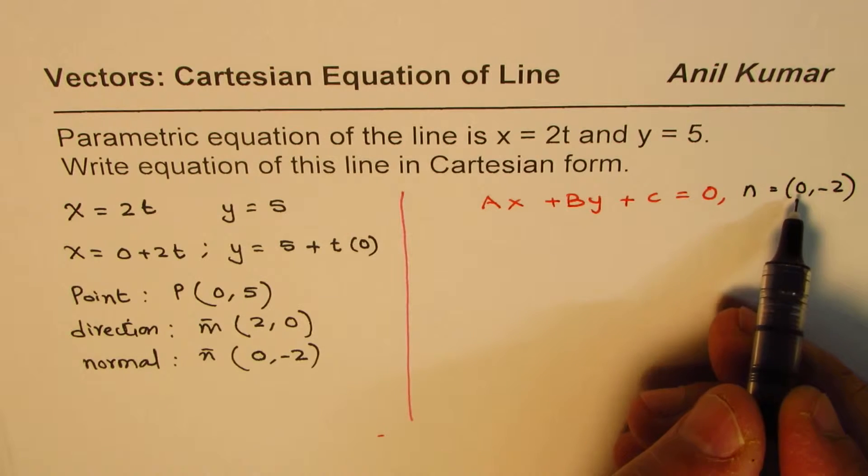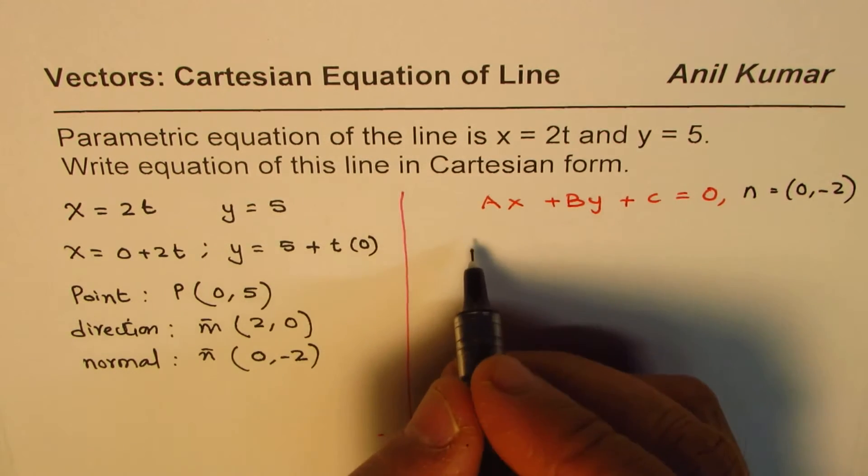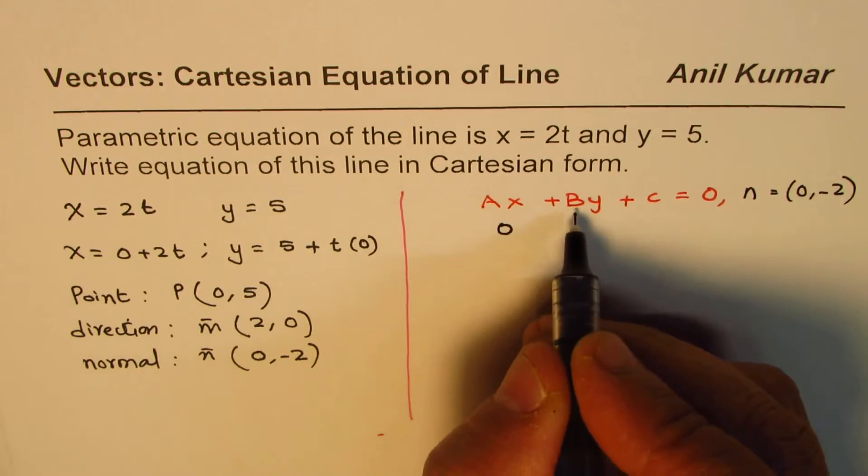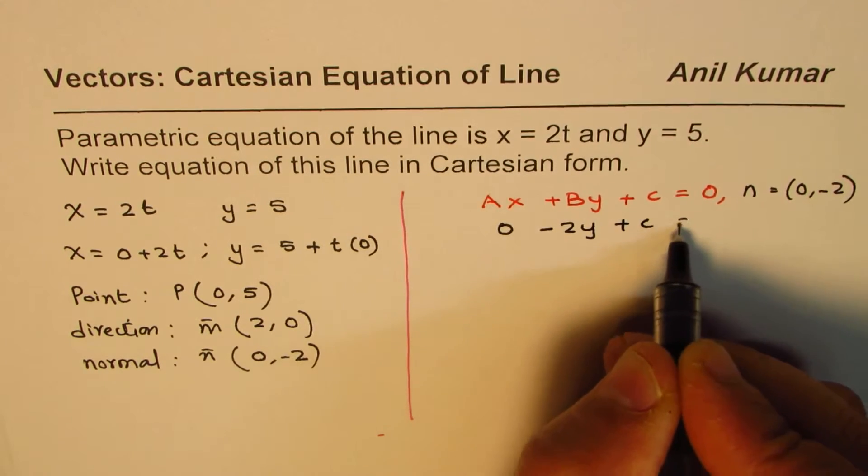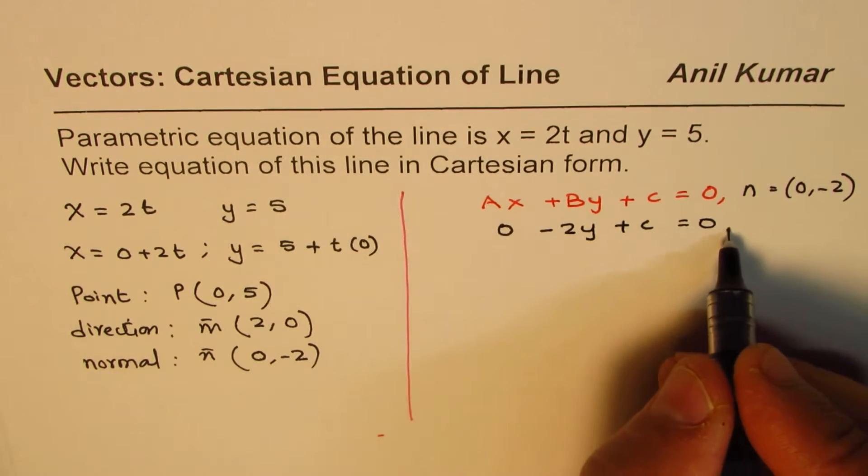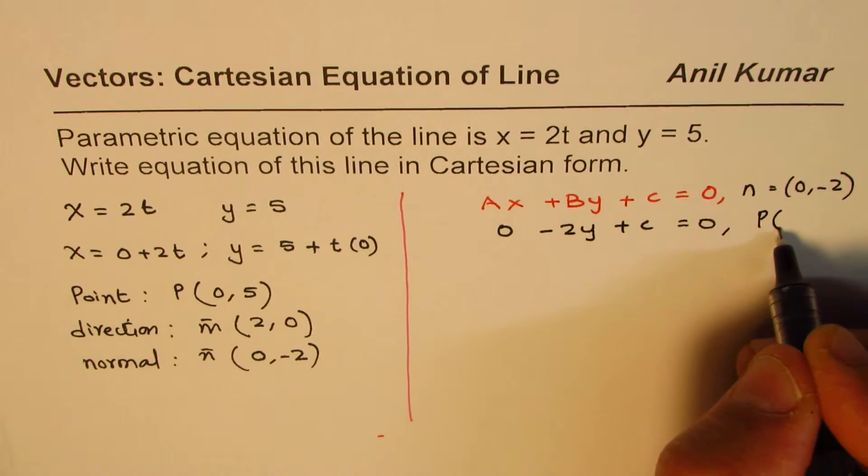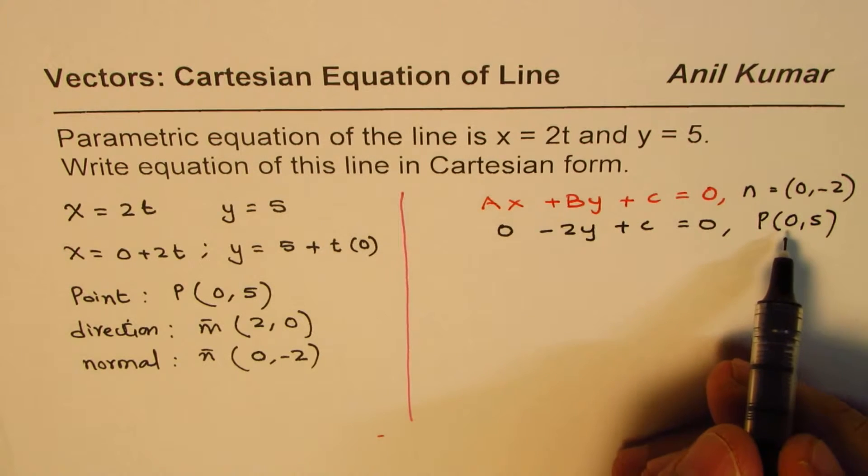So if I write 0 for a and minus 2 for b, what do I get? This becomes 0, and here we have minus 2y plus c equals 0. And now we know that the point is (0, 5). We have a point (0, 5) on this line.